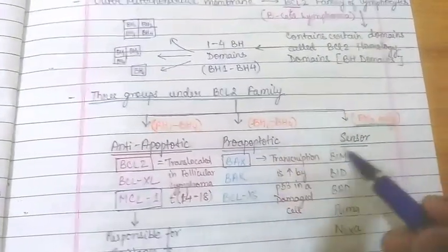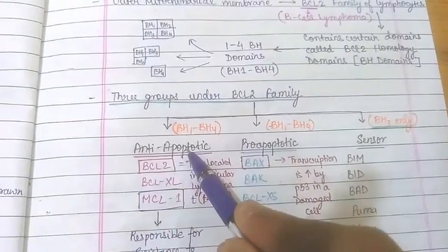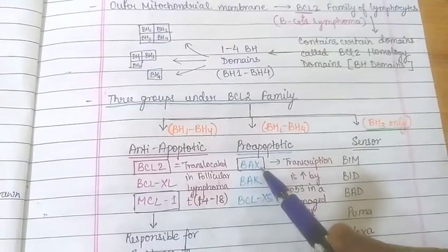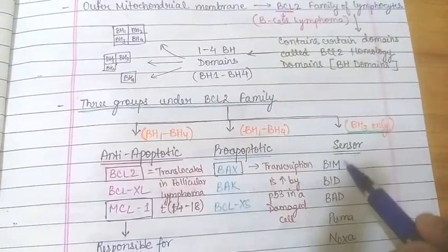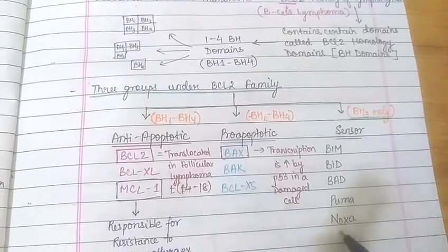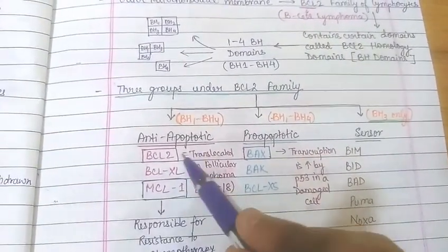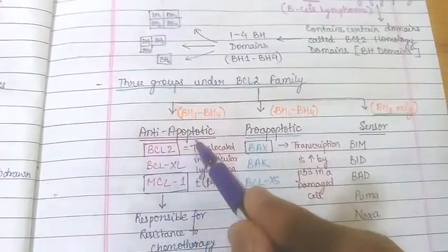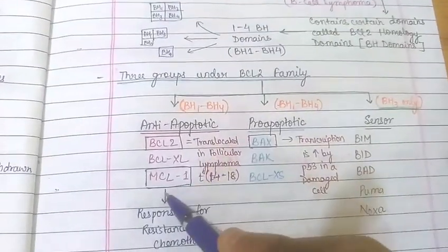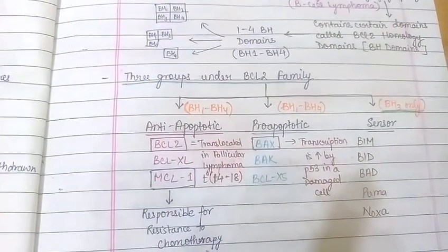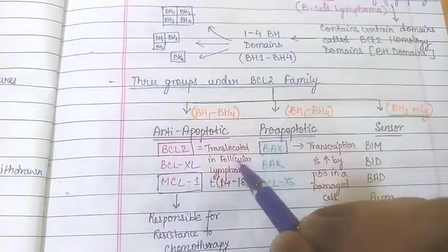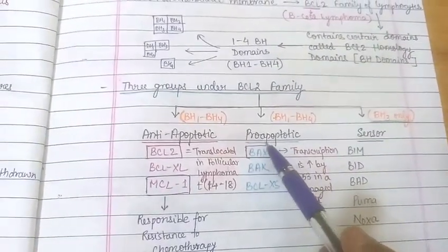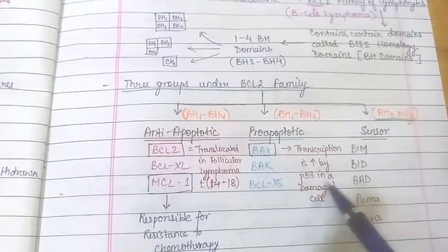Three groups exist under the BCL-2 family: anti-apoptotic (BCL-2, BCL-XL, MCL-1), pro-apoptotic (BAX, BAK, BCL-XS), and sensor proteins (BIM, BID, PUMA, NOXA). MCL-1 is responsible for resistance to chemotherapy. BCL-2 is translocated in follicular lymphoma — very important. BAX transcription is increased by P53 in a damaged cell.